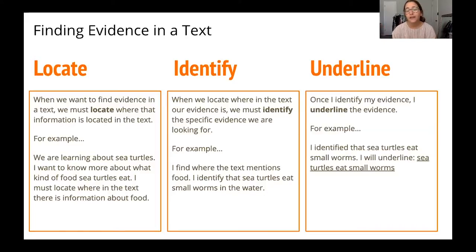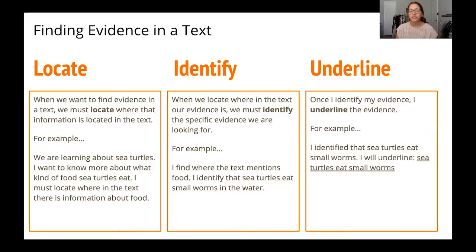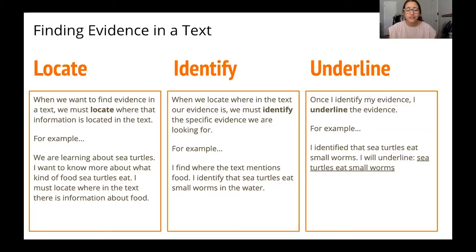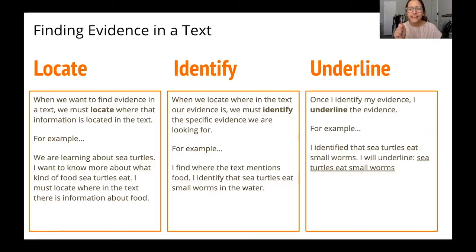Once you realize that food was in the first paragraph, you must look for where your answer or evidence is. For example, I found where the text mentions food, and I identify that sea turtles eat small worms in the water. The paragraph might have a bunch of sentences about food, but I actually have to find the specific sentence that answers my question. So if my question was what kind of food do sea turtles eat, I locate it in the first paragraph, then I find the sentence about sea turtles eating small worms.